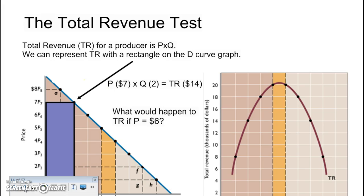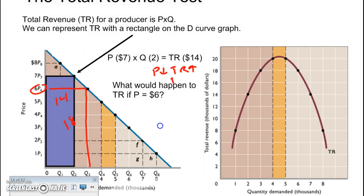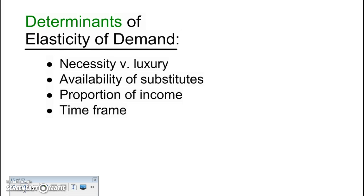The total revenue test is a much easier way to assess elasticity. At a price of seven dollars, quantity demanded is two and total revenue is $14. If the price drops to six, quantity demanded rises to three and total revenue goes to $18. If price goes down and total revenue goes up, we call that elastic demand.